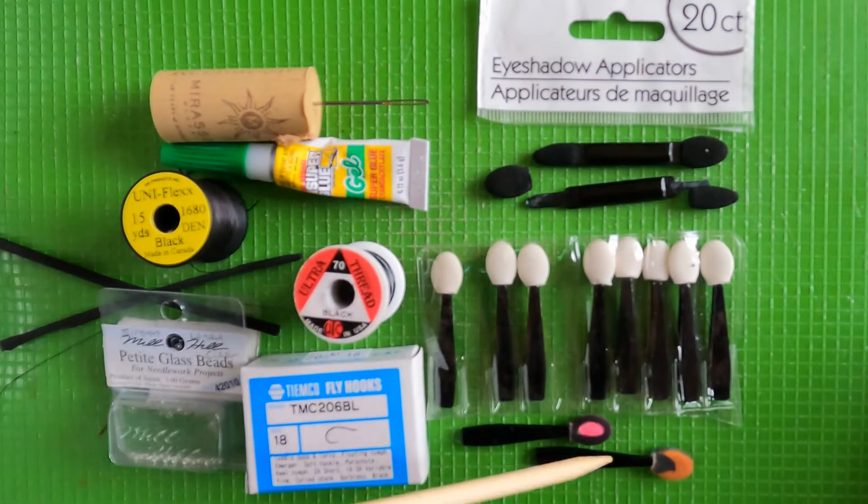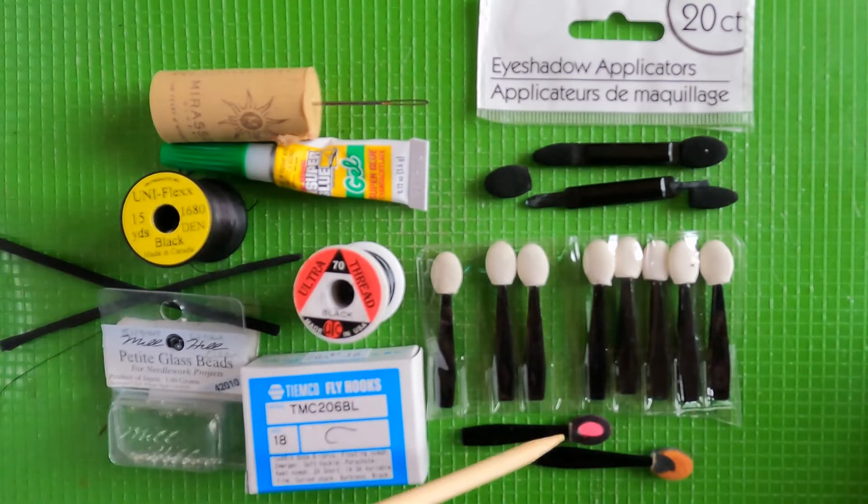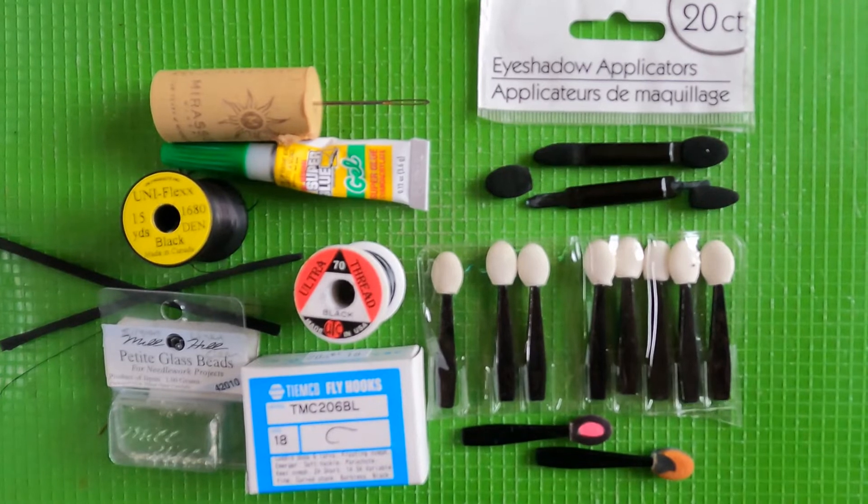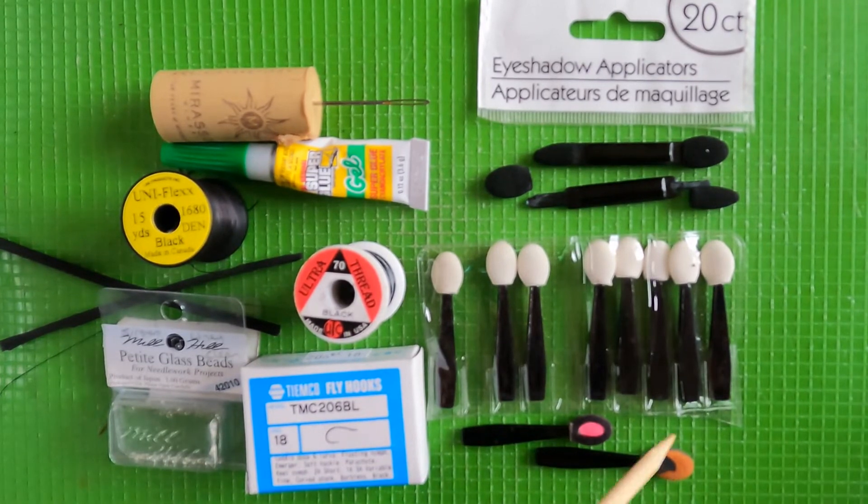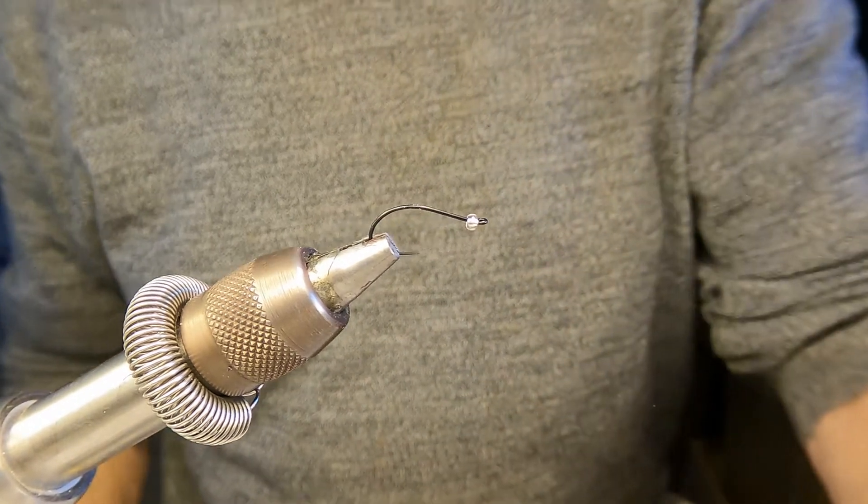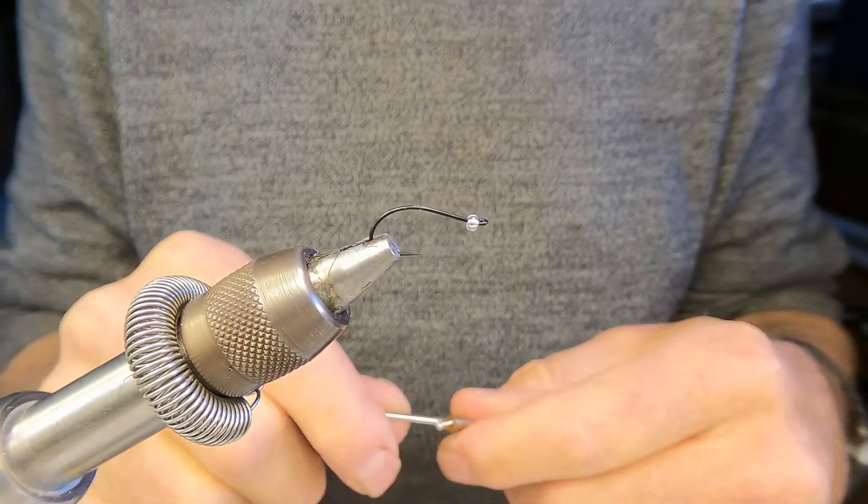The white ones have the advantage that you can use permanent markers to color them. Here I put a high-vis spot which is popular on beetle patterns, and you can also use it to do like a back swimmer type coloration.